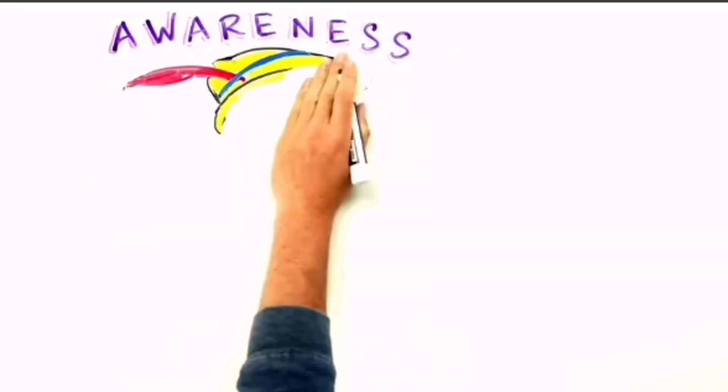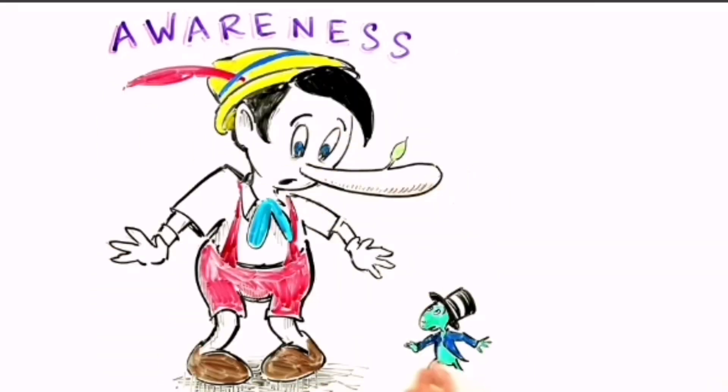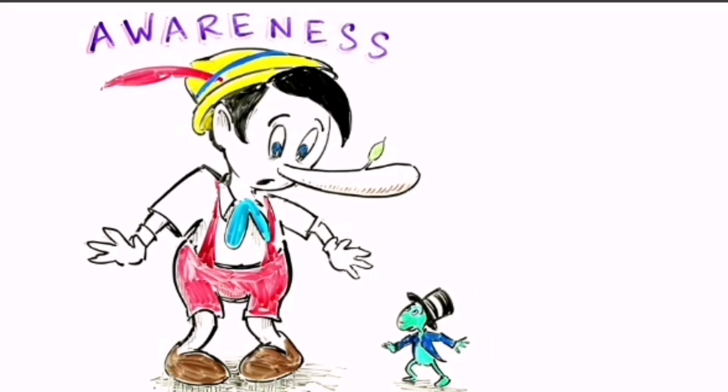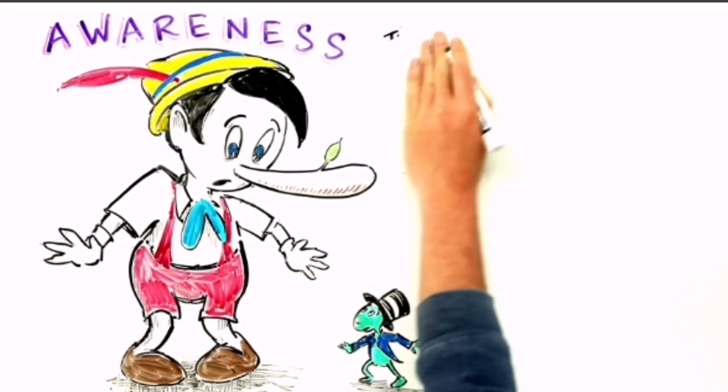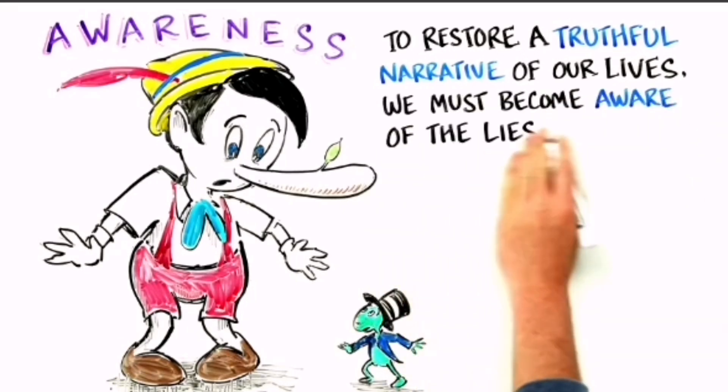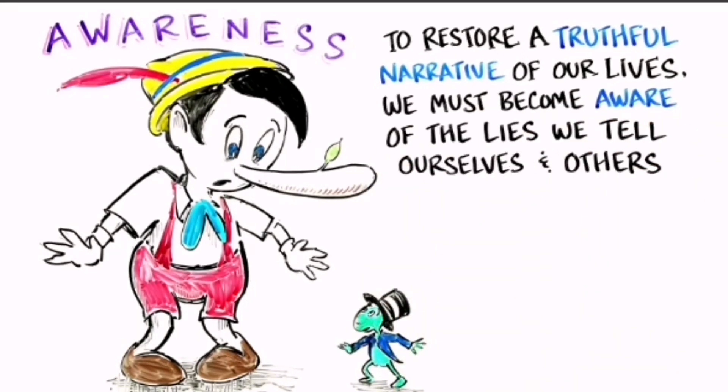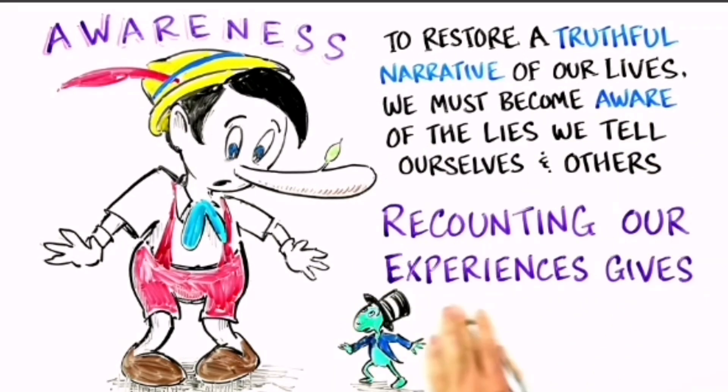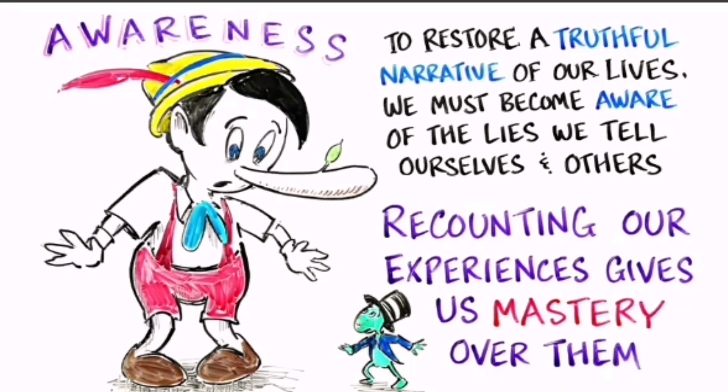Awareness. Lying can become so routine that we are unaware that we are even doing it. I call this the lying habit. To restore a truthful narrative of our lives, we must become aware of the lies we tell ourselves and others. Recounting our experiences gives us mastery over them.